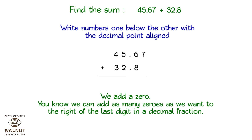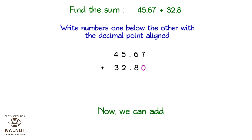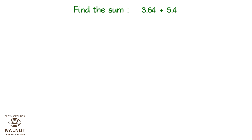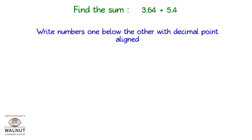So it becomes 45.67 plus 32.80. Now we can add, and the answer is 78.47. Find the sum 3.64 plus 5.4. Write the numbers one below the other with the decimal point aligned.